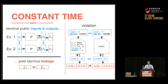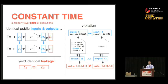Constant time looks a bit like noninterference. It's a two-safety property — a property over pairs of executions rather than single executions. It says: given two executions of program P with inputs I1 and I2 and leakage L1 and L2, whenever the public parts of the inputs are identical (secrets can differ) and the public outputs are identical, the leakage must be identical. That is the definition of constant time we use.